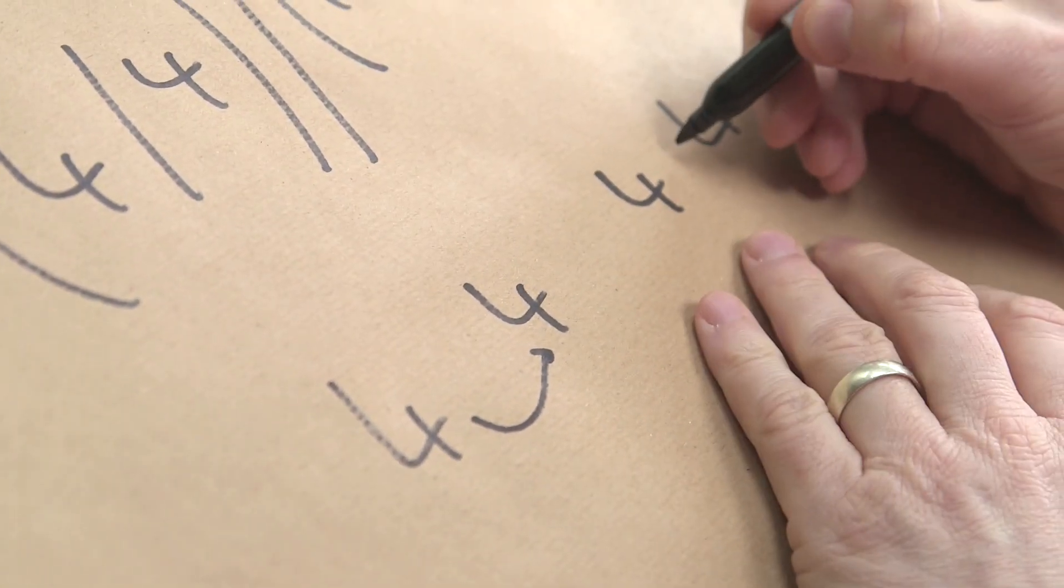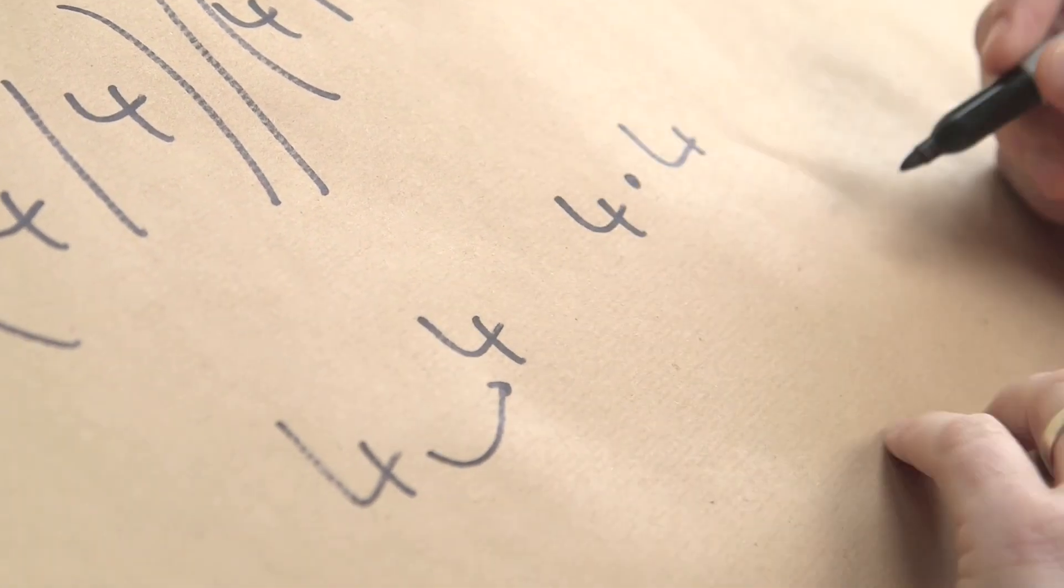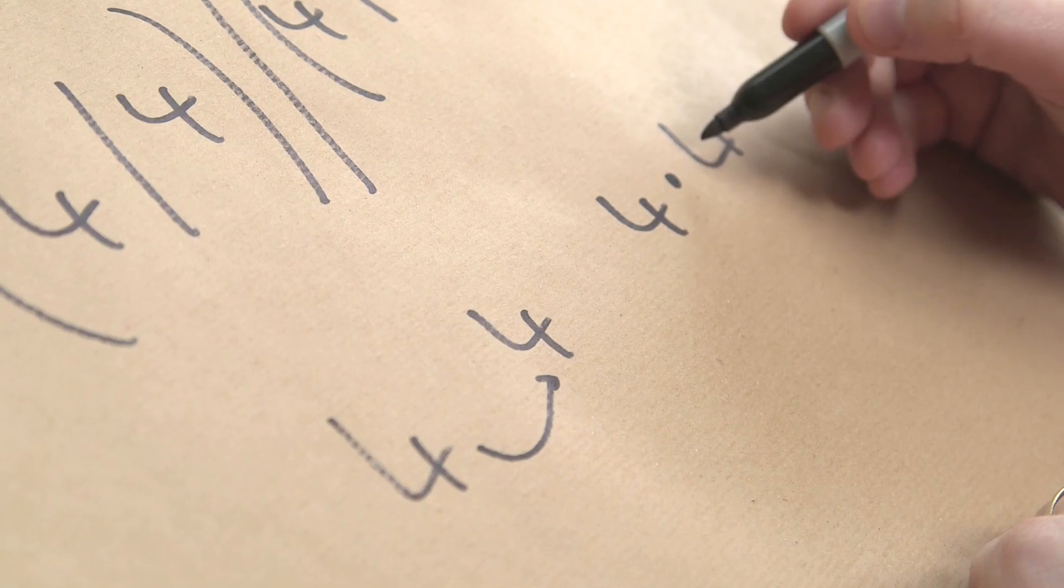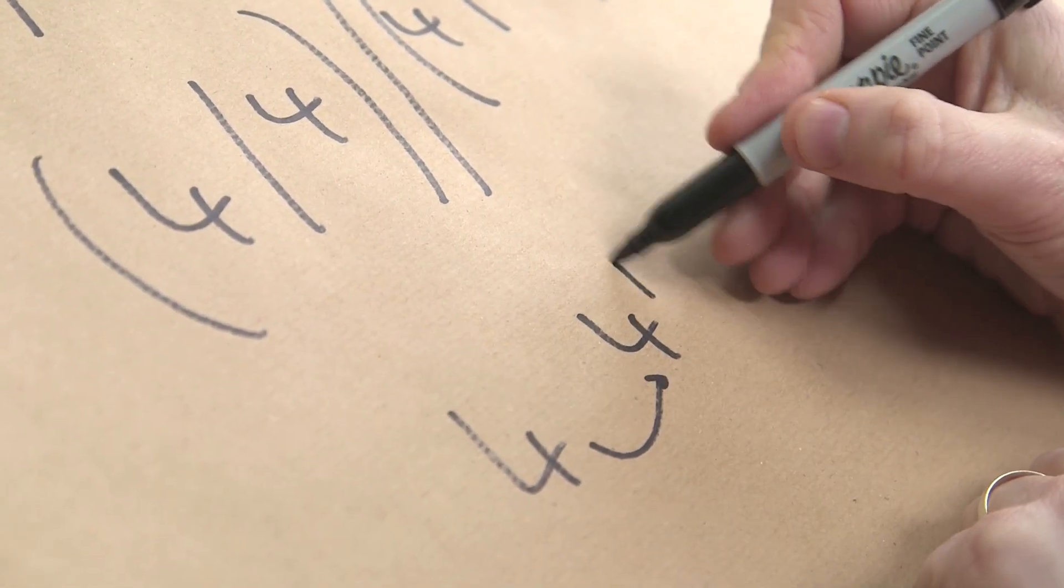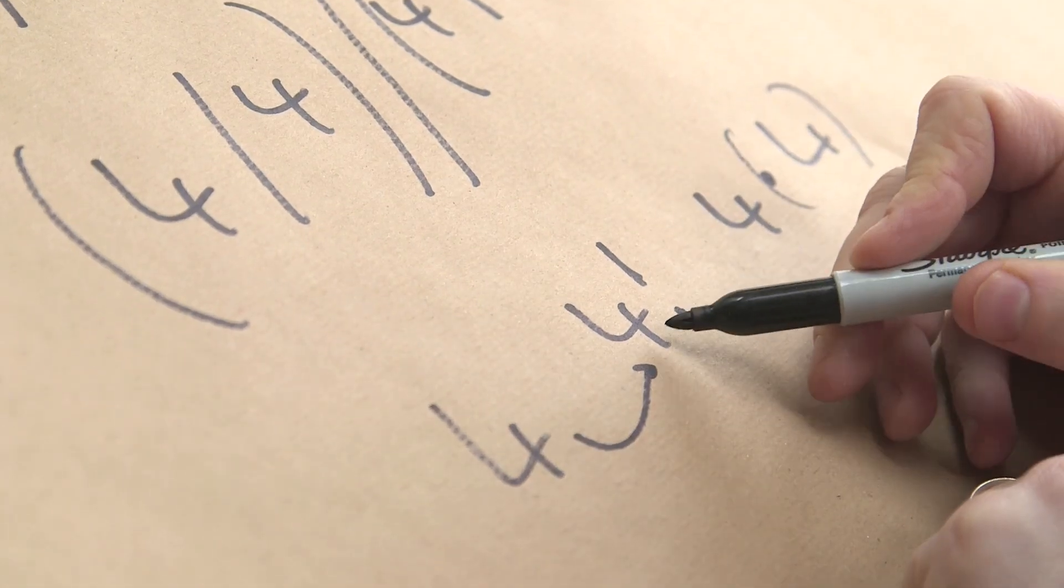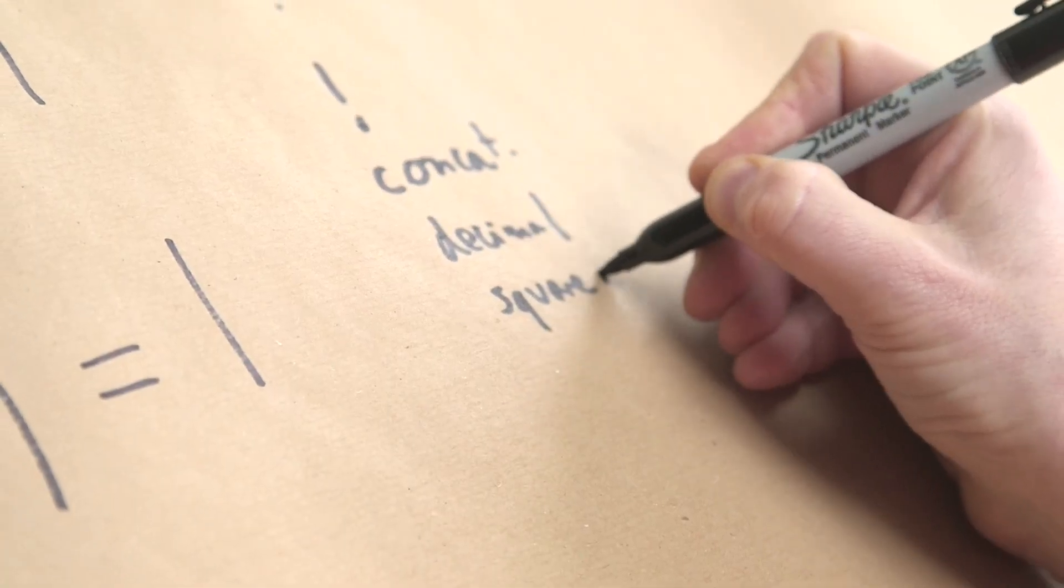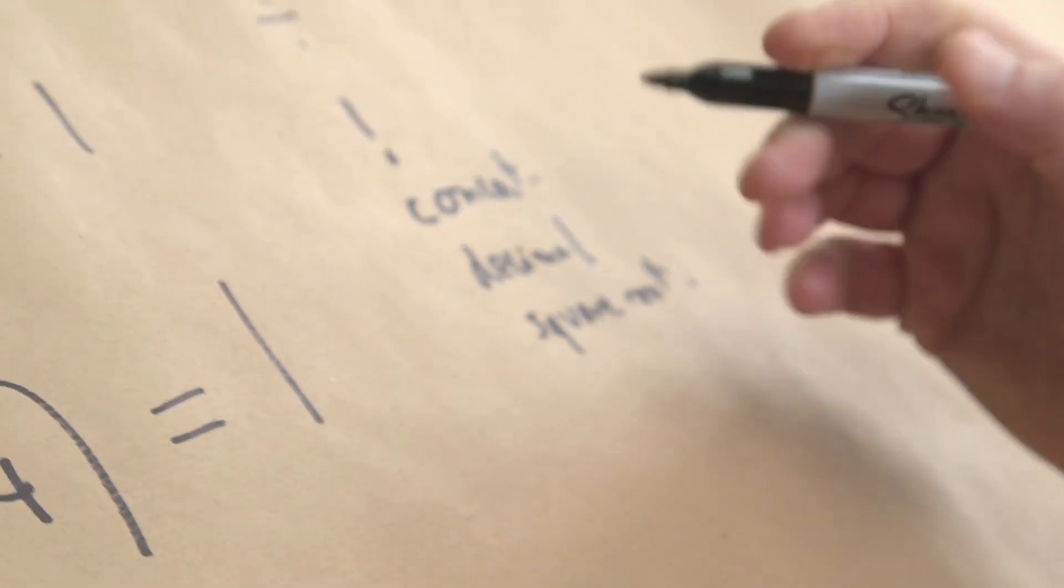We introduce the decimal point, so one of these could be zero point four, and we introduce the factorial, which means it's four times three times two times one. And also we need the square root.